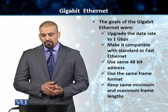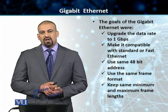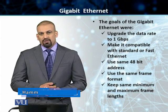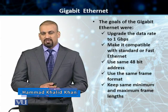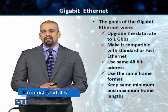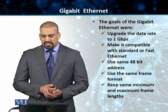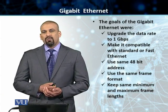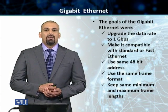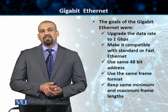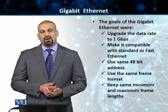In the case of Gigabit Ethernet, there were certain goals to support, as was the case with Fast Ethernet. The first goal was to upgrade the data rate from 100 Megabits per second of Fast Ethernet to 1 Gigabit per second. The second goal was to make it compatible with Standard Ethernet or Fast Ethernet, since there were still quite a few implementations of Standard Ethernet in the market at the time of 1 GigE development.